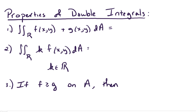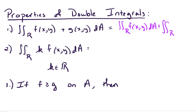First of all, the double integral over R of f(x,y) plus g(x,y) dA is just equal to the sum of the integrals: the double integral over R of f(x,y) dA, plus the double integral over R of g(x,y) dA.